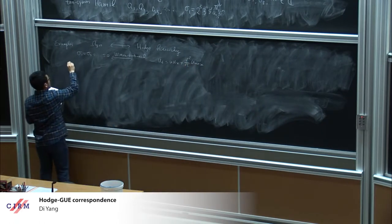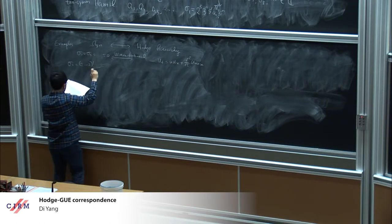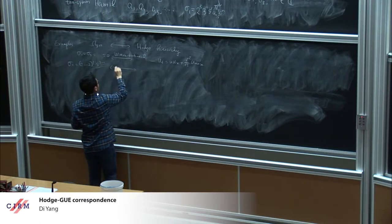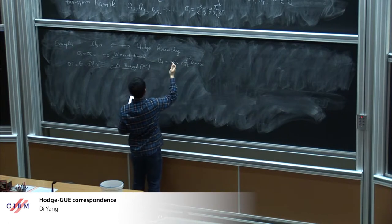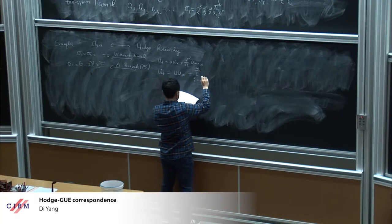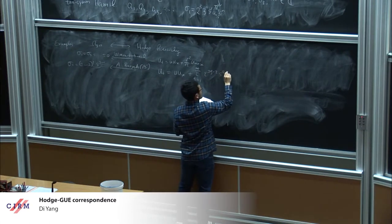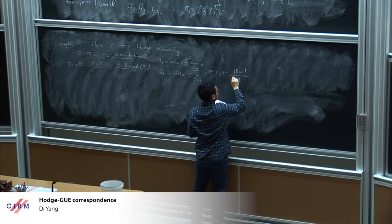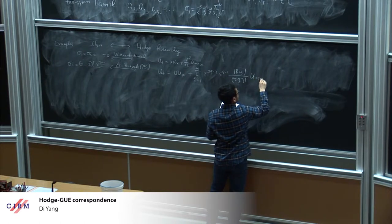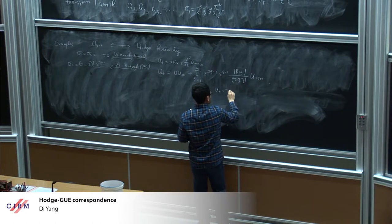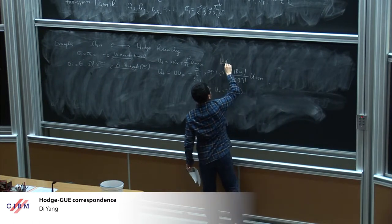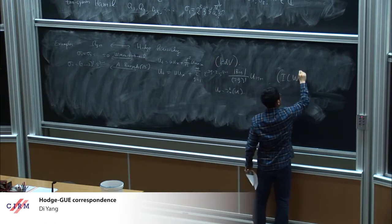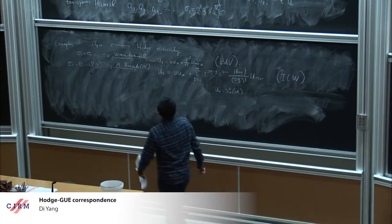In the case sigma_{2i-1} equals (2i-2)! · s^{2i-1}, according to Alexander Buryak in 2013, the corresponding Hodge hierarchy has an explicit form. Here u^{(k)} is the k-th derivative of u with respect to x. This hierarchy is also very famous — the first equation is KdV, and this one is a long-wave equation.